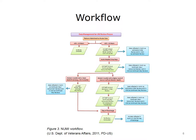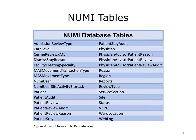As one might expect, there is a significant amount of information to maintain, along with a complex database design to support storing and reviewing the required information. NUMI has 30 tables in its database to support its activities. Note that these have meaningful names for the database architects, and some are immediately recognizable. Patient, for example, would contain patient information, and physician would contain physician information. The next slides will examine some of these 30 tables in more detail.